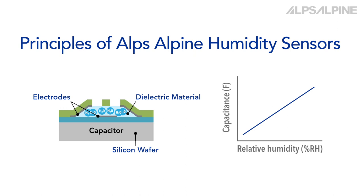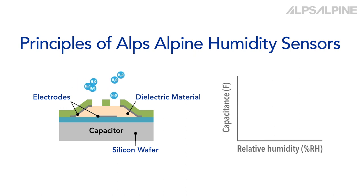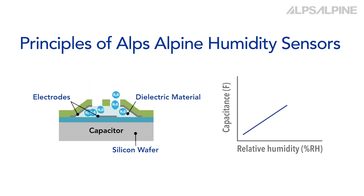By contrast, resistive humidity sensors use the change in conductivity of the dielectric material resulting from absorption of moisture. A built-in IC converts capacitance values obtained via the sensor into voltage.